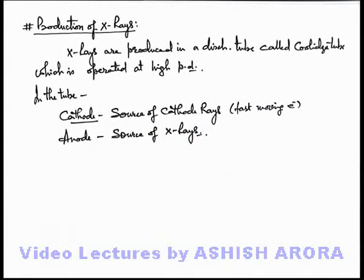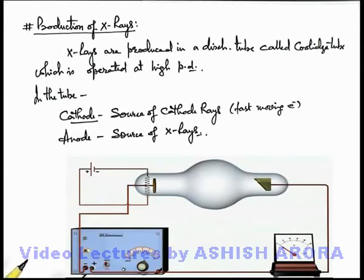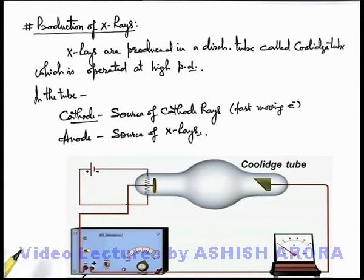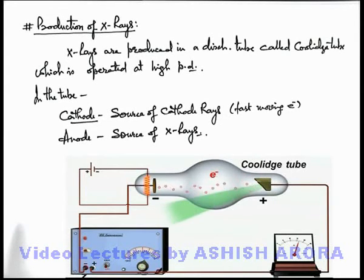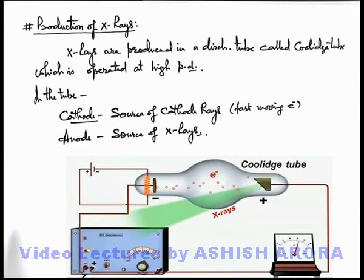Let's have a look at the basic functionality of X-ray production. Here you can see this picture gives you the idea about a realistic Coolidge tube. This is not a normal discharge tube — it has a bulge in between. When it is switched on across a high potential difference, fast moving electrons are generated from the cathode and these strike the anode with very high kinetic energy. After the collision of these electrons, X-rays are produced, which are emitted from the bulge portion of the Coolidge tube as we can see.